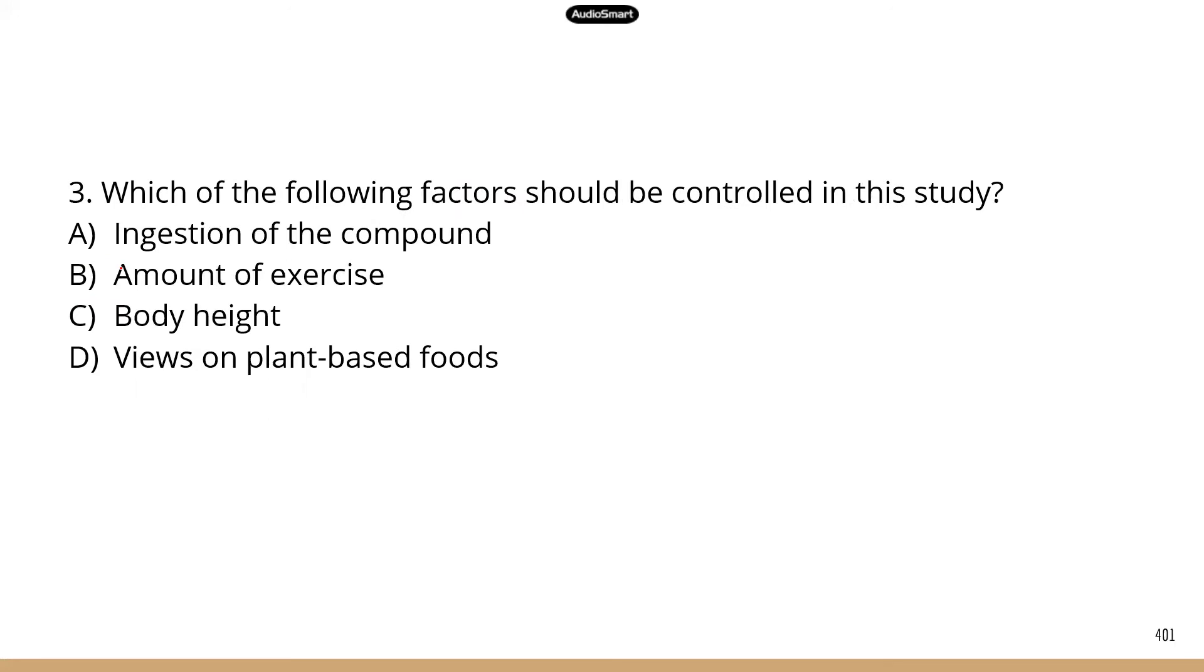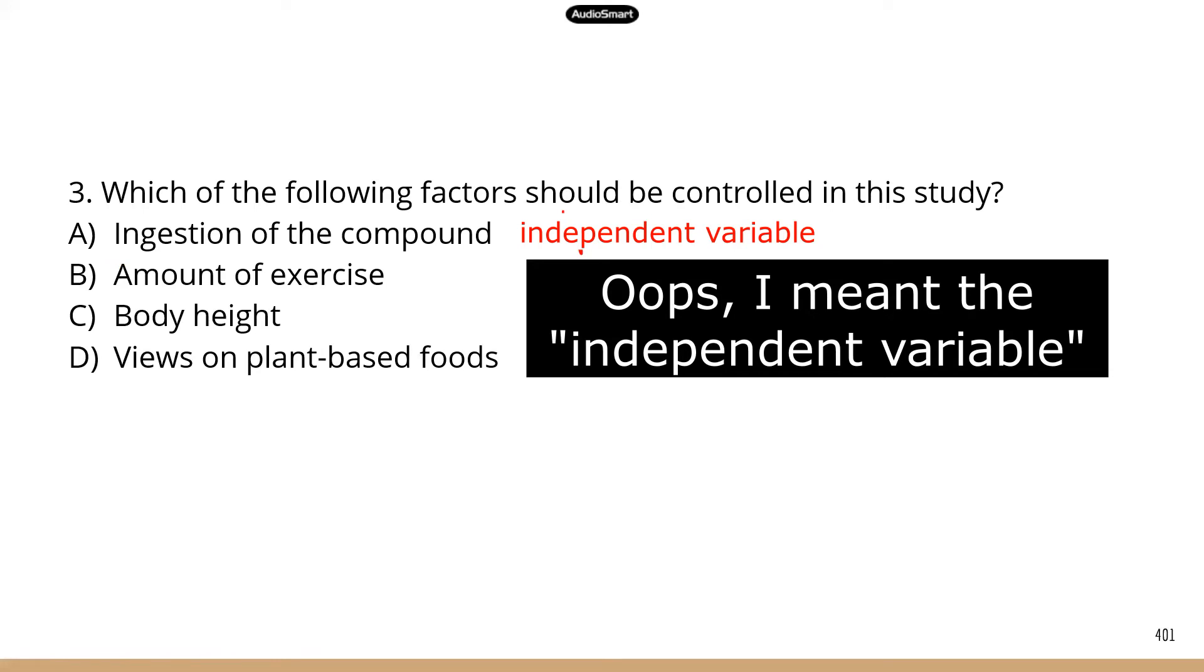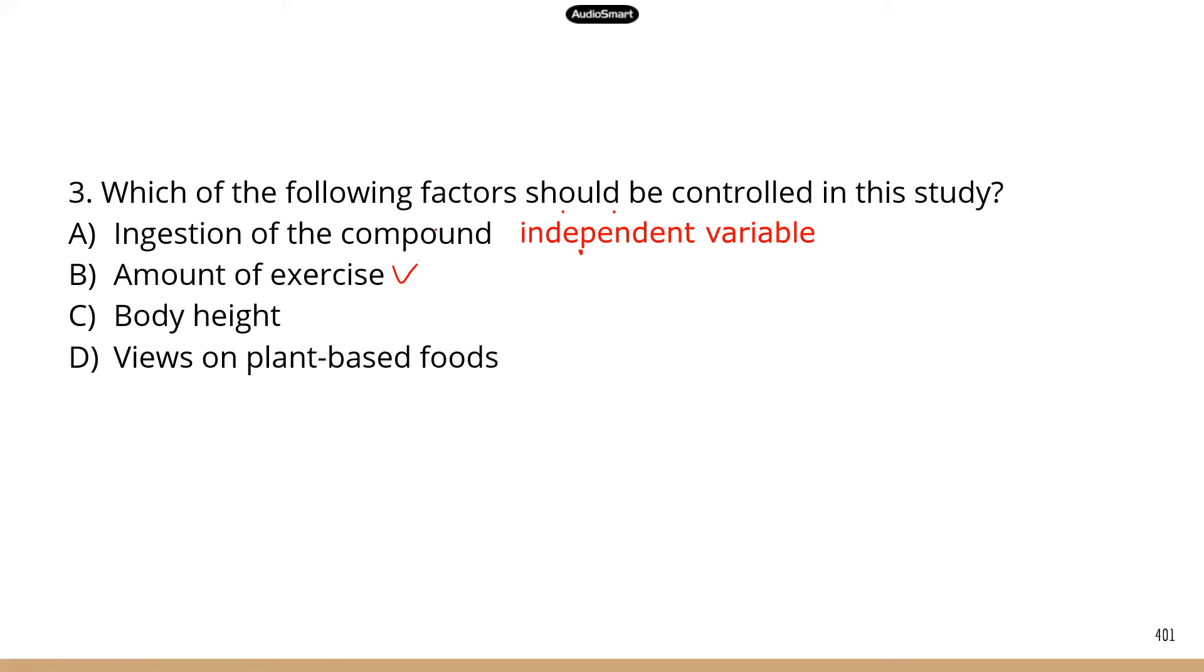Number three, which of the following factors should be controlled in this study? Any compounding factors that could lead to weight loss should be controlled, should be kept similar among the different groups. Ingestion of the compound, no, that is the independent variable. Amount of exercise, yes, we probably should make that very similar across the different groups. The body height. Now height and weight, they don't have any definitive relationship. So height has nothing to do with weight. So C is not correct. Last, the views on plant-based food. That's also unrelated. Whatever view you have on plant-based foods probably will not affect your weight loss in this particular study.